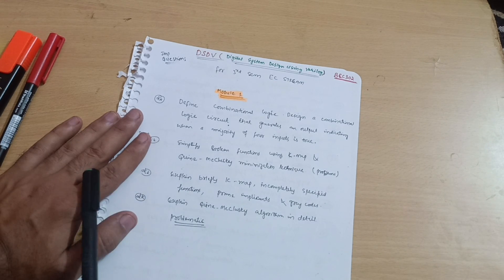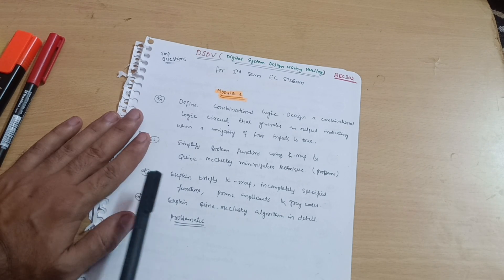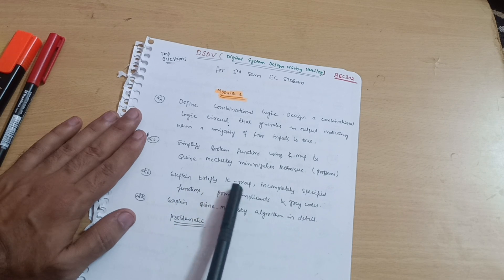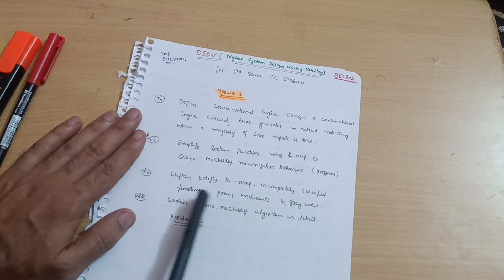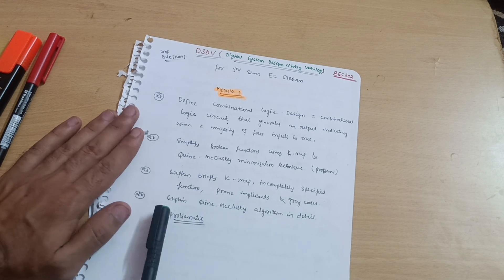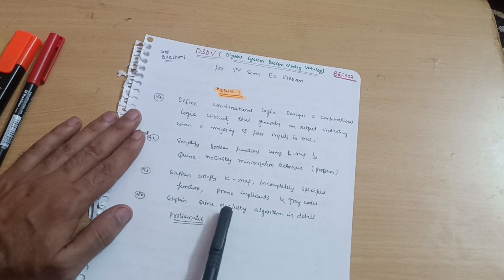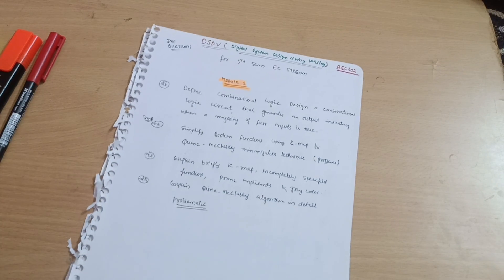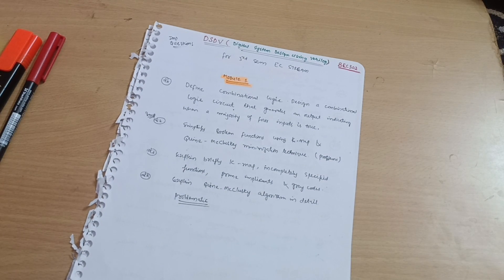Next question is explain briefly K-map, incompletely specified functions, prime implicants, and Gray codes. This may be the possible question: explain Quine-McCluskey algorithm in detail. Rest of this module is totally problematic. I will upload the papers so that you can practice problems on this particular topic.